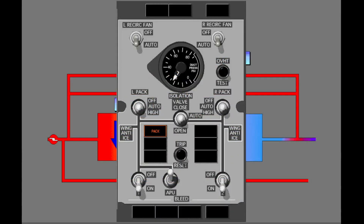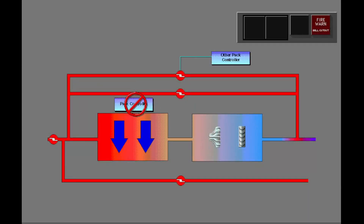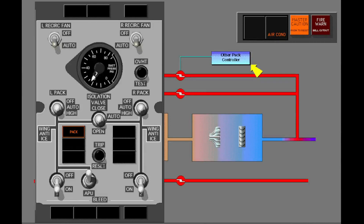The pack light will also illuminate if both the primary and secondary controller for the related pack do not operate. In this case, all control of the pack is lost and the system will not reset. If the primary or standby controller for the related pack do not operate, the pack light illuminates when recall is pressed. Control of the pack changes to the standby controller if the primary controller does not operate.